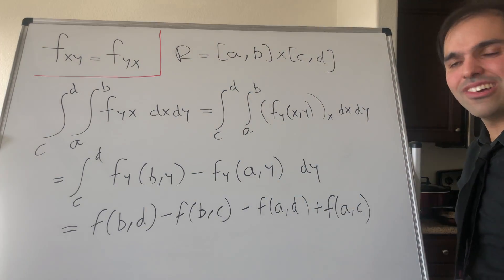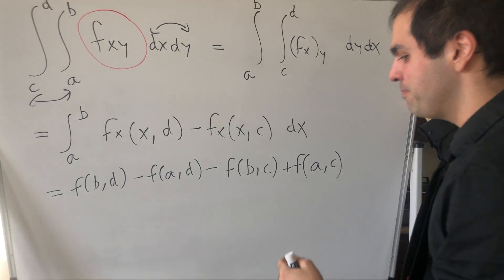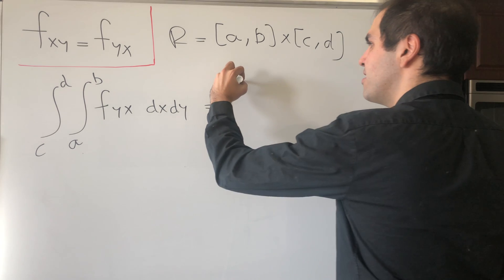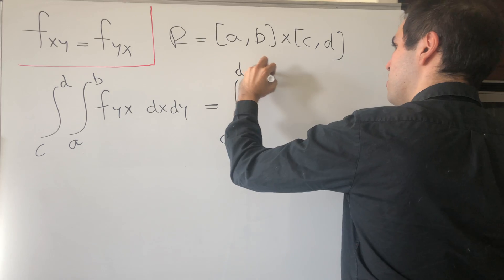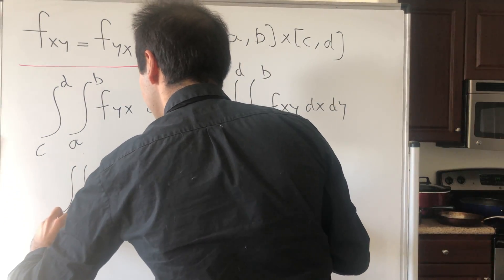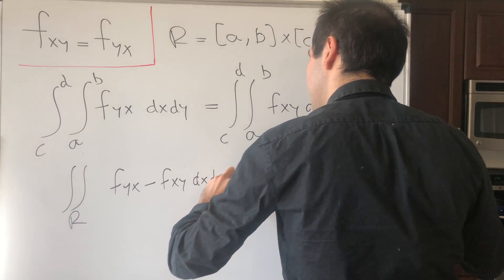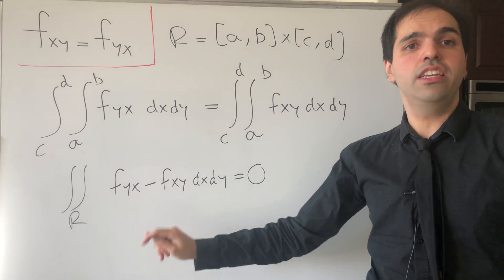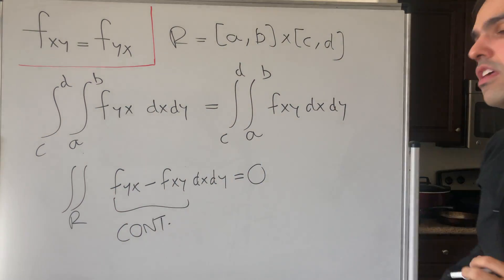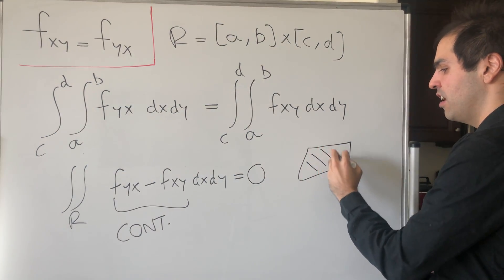So in particular, we can conclude that the integral of f_yx equals the integral of f_xy over that rectangle. That is the crucial point. We found that integrating f_yx over the rectangle is the same as integrating f_xy over the rectangle. So if you take the difference, you get that the integral over that arbitrary rectangle of f_yx minus f_xy dx dy equals zero.